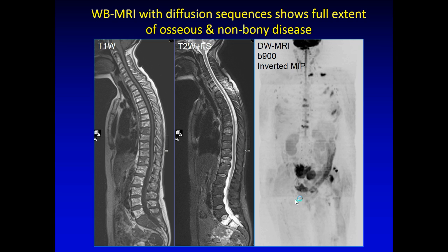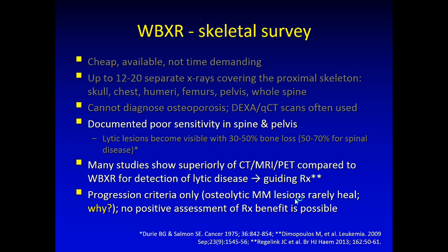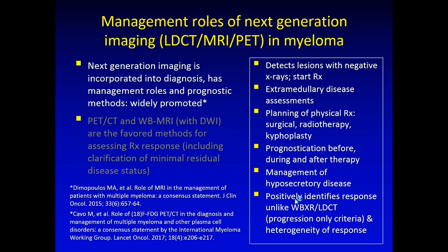Here is the subsequent advantage of whole-body MRI scanning — the ability to look at the whole body. One other disadvantage of skeletal surveys is that you cannot really identify the benefit of therapy; therefore you only have progression criteria. That's because osteolytic myeloma lesions never really heal. Given these limitations, we now have low-dose CT, whole-body MRI, and PET scans being widely advocated, having a number of management roles and being prognostic. Whole-body MRI and PET scans are the favored methods for assessing response to treatment and have now been incorporated into international guidelines.